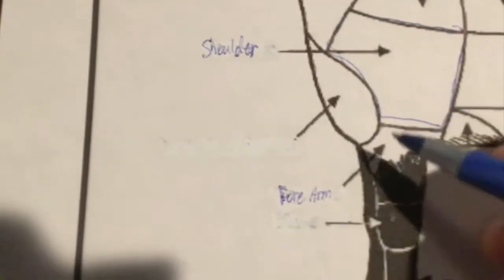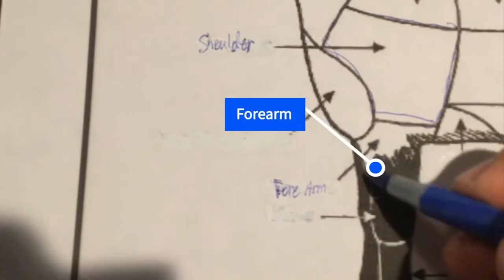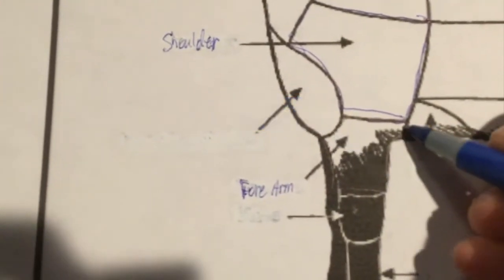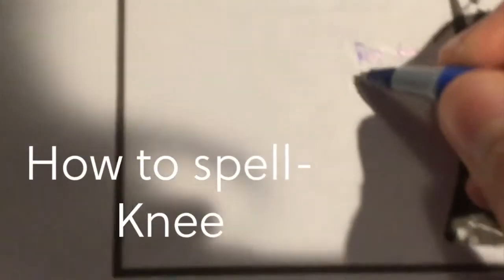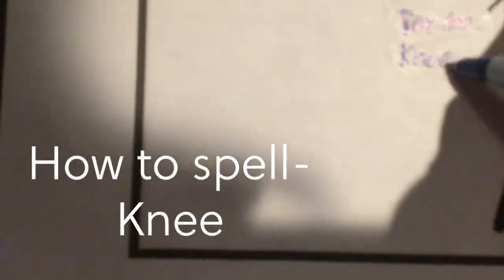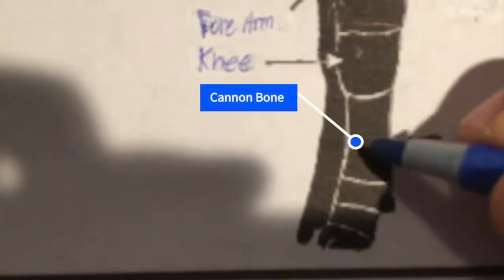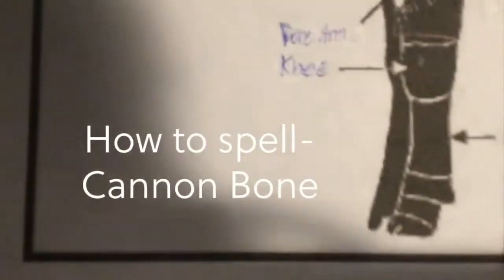But I'd like to show you some of the other ones. Right here is the forearm, and right here is the knee. Right here in this section is the cannon bone.